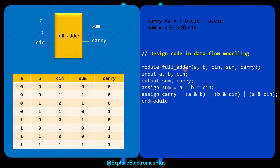Looking at the Verilog code line by line: the module is named full_adder; A, B, C_in, sum, and carry are the input/output ports. The assign statement: sum = A XOR B XOR C_in uses the XOR operator between A, B, and C_in. For assign carry, we use the AND and OR operators. This is the Verilog code in dataflow modeling for the full adder.